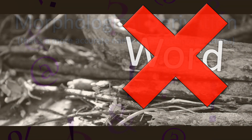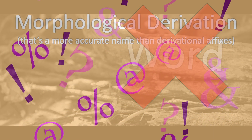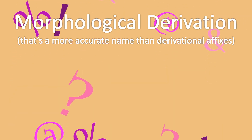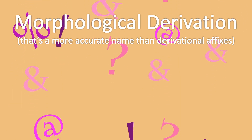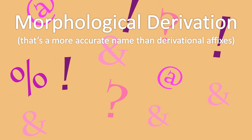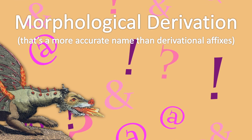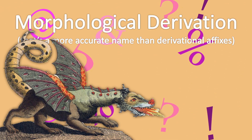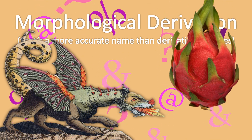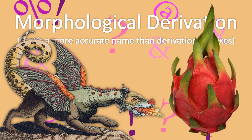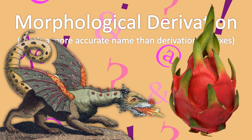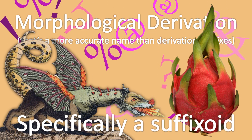This is done with derivational affixes. For reference, a derivational affix is one that changes the meaning of a word, where an inflectional affix changes the circumstances around it. Dragon and dragons are both talking about the concept of a dragon despite the affix, but dragon and dragonfruit are different words with different meanings — because fruit is being used as a derivational affix.